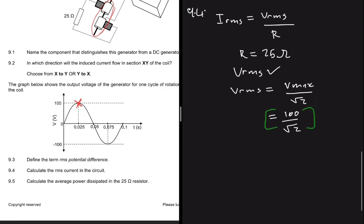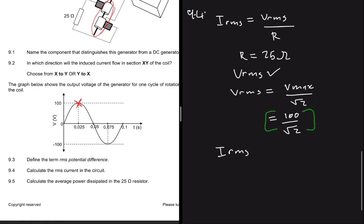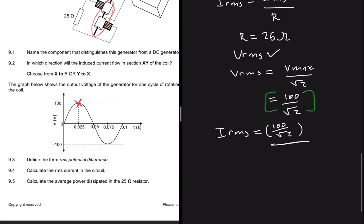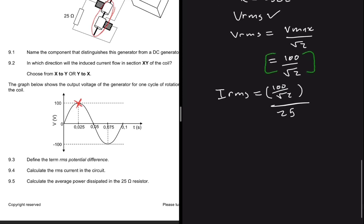Now we can substitute this value on our equation of I_rms. We're gonna have I_rms equals to 100 divided by the square root of two, divided by R which is the resistance, 25 ohms. So I_rms will be equals to 2.83 amps.